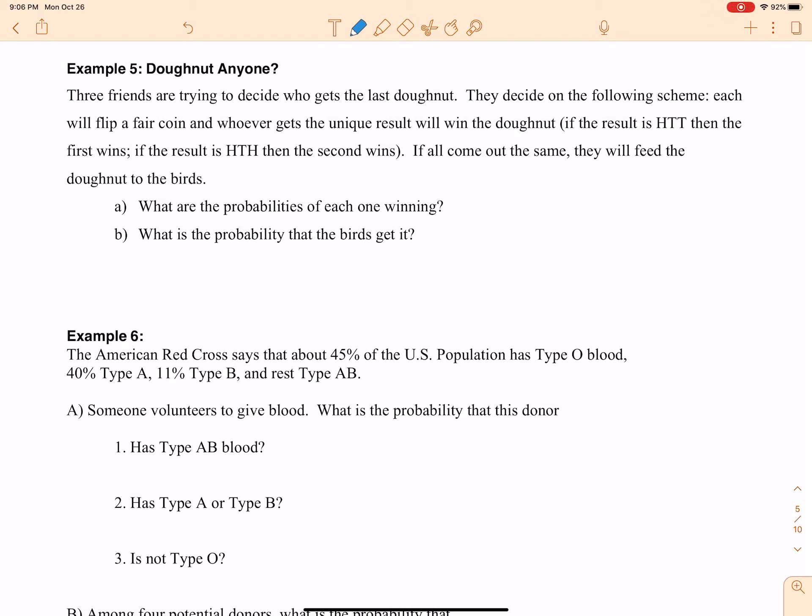Alright AP Statistics, we are back to our probability examples. We're going to do example 5. A donut, anyone? Yes, please. Give me a dozen.